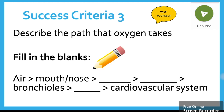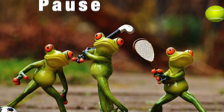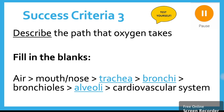Our third and final success criteria: describe the path that oxygen takes. Write down the text starting with air and ending with cardiovascular system, and fill in the blanks. Oxygen starts in the air, goes through our mouth and nose, down our trachea, bronchi, and bronchioles to the alveoli, and then it leaves the respiratory system and goes to the cardiovascular system.